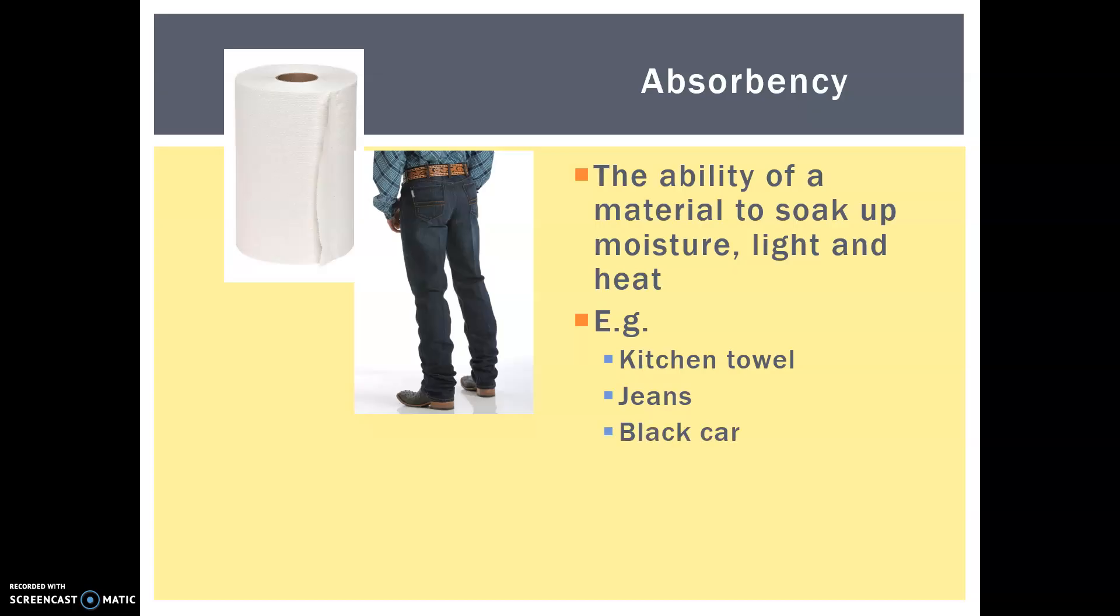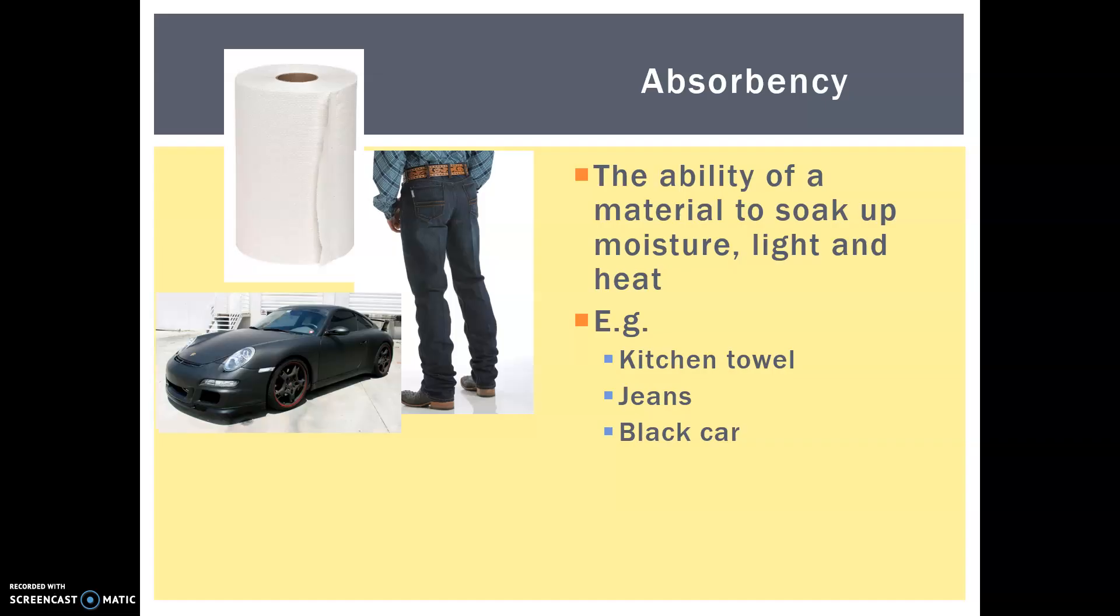But we're also thinking about things like black cars, and this one's even matte, it's not even shiny. So this is going to absorb a lot of light and heat. So comparatively, if it was a white shiny car, it would not get anywhere near as hot inside as this matte black one.